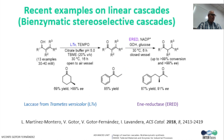The possibility to couple laccases with other enzymes is also demonstrated, for example with ene-reductases — enzymes responsible for the stereoselective reduction of electron-deficient alkenes conjugated with electron-withdrawing groups such as ketones, aldehydes, or nitro groups. In this case, both enzymes can work under similar pH conditions, but some specific reagents required for the ene-reductase reaction inhibit the laccase, or vice versa. Best results were found when the reaction was run in a sequential manner by adding the ene-reductase, glucose, and glucose dehydrogenase once the first oxidation step was finished. Overall, 13 allylic alcohols were obtained with good yields and good stereoselectivity when a stereogenic center was present in the molecule.